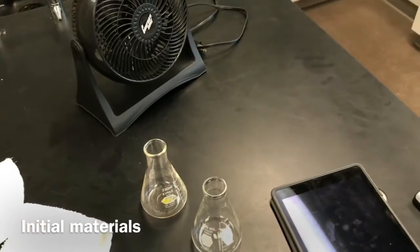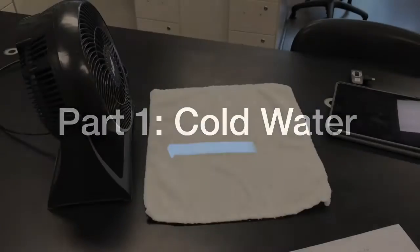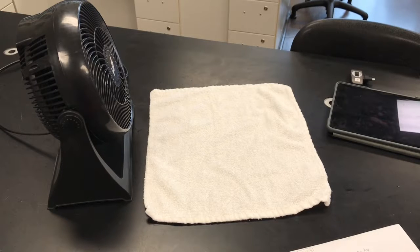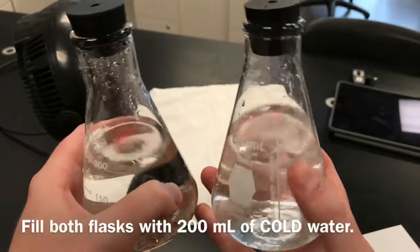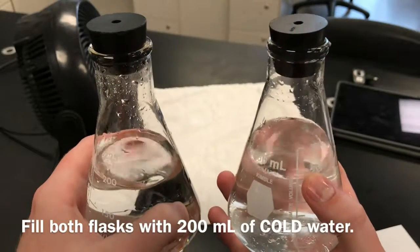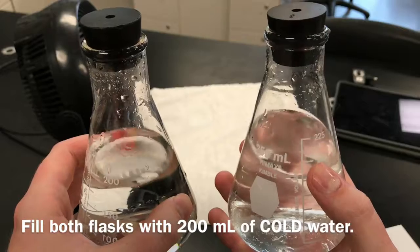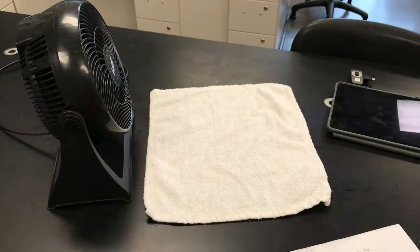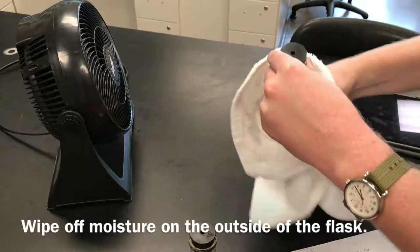Okay, so the very first thing you want to do for the procedure in this lab is to fill up both of your 250 milliliter flasks with about 200 milliliters of cold tap water. So 200 milliliters cold water in both of these flasks, and then I'm just gonna set them down on the towel here.